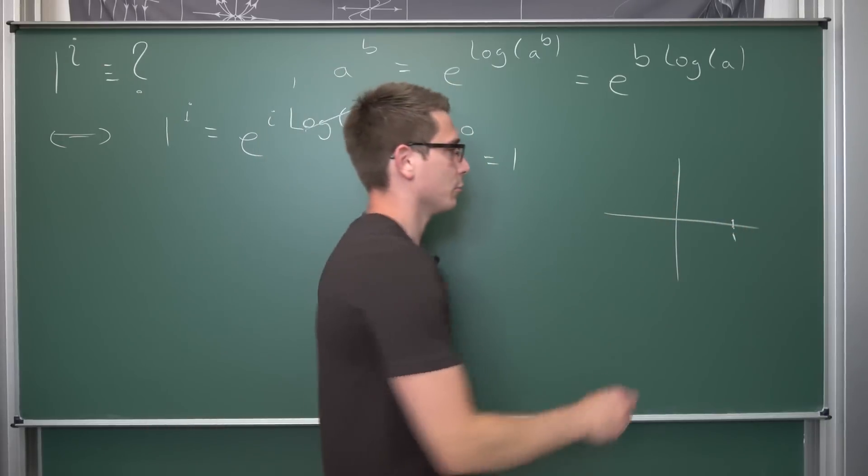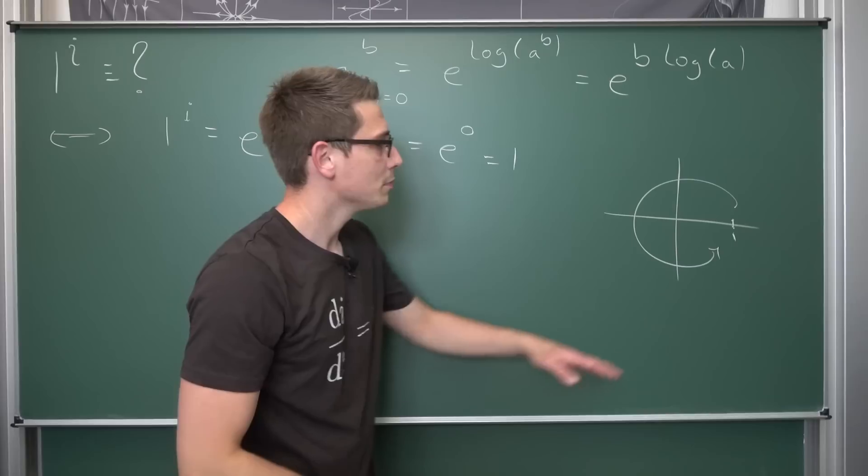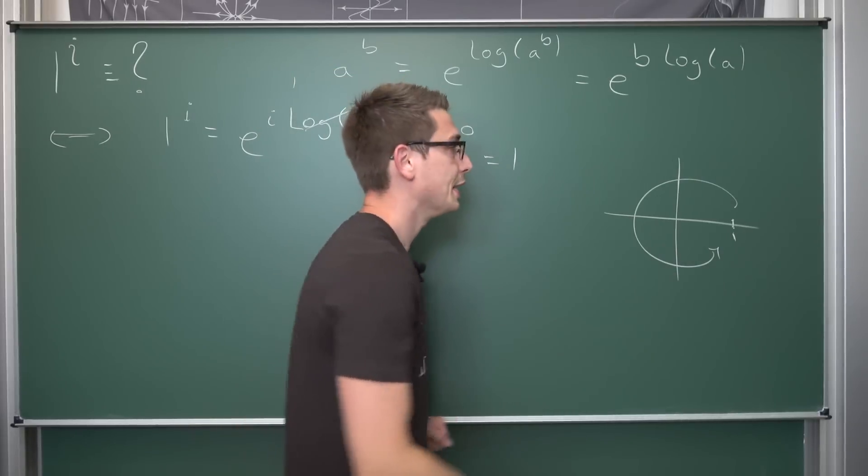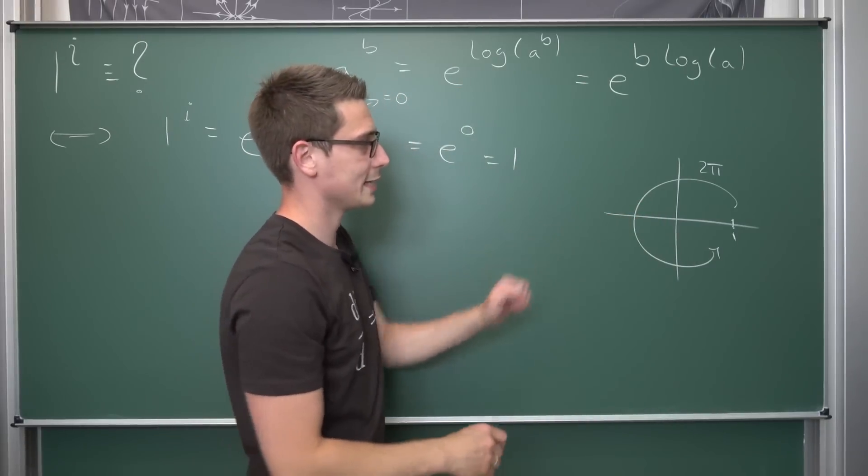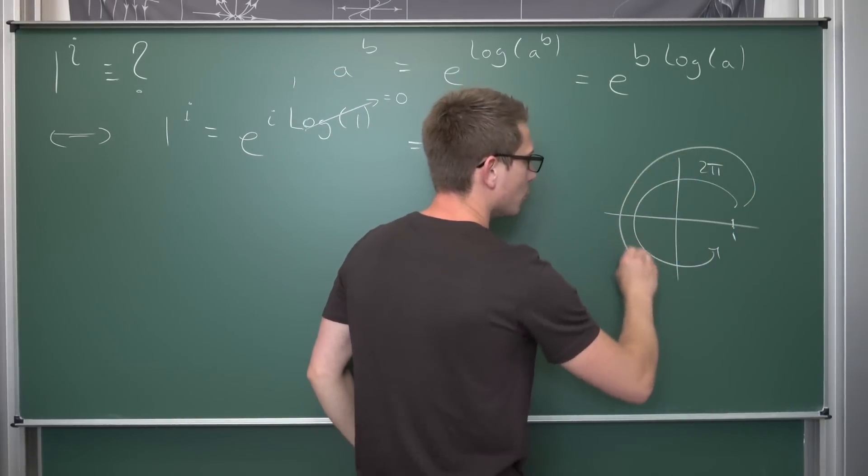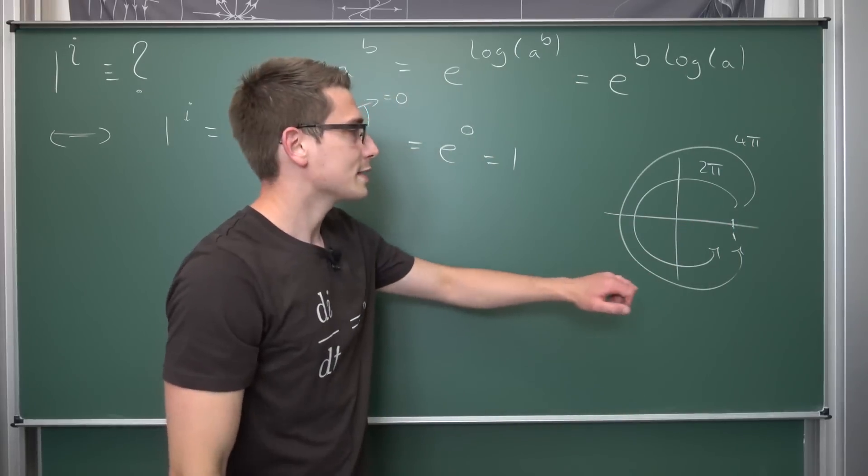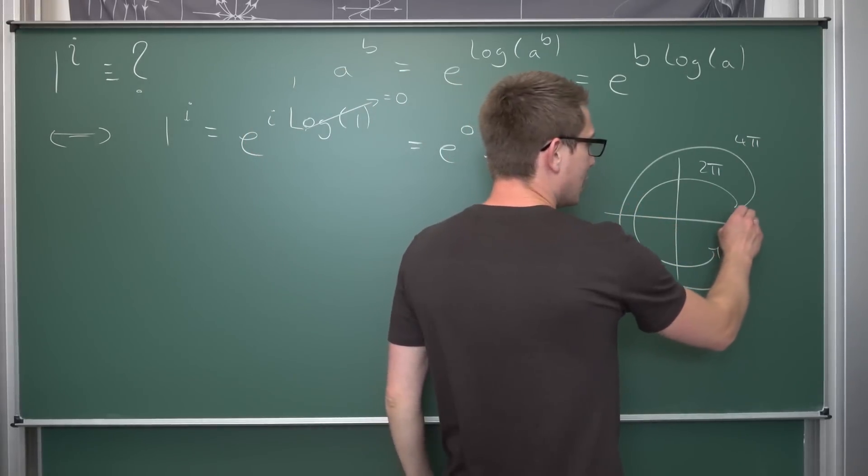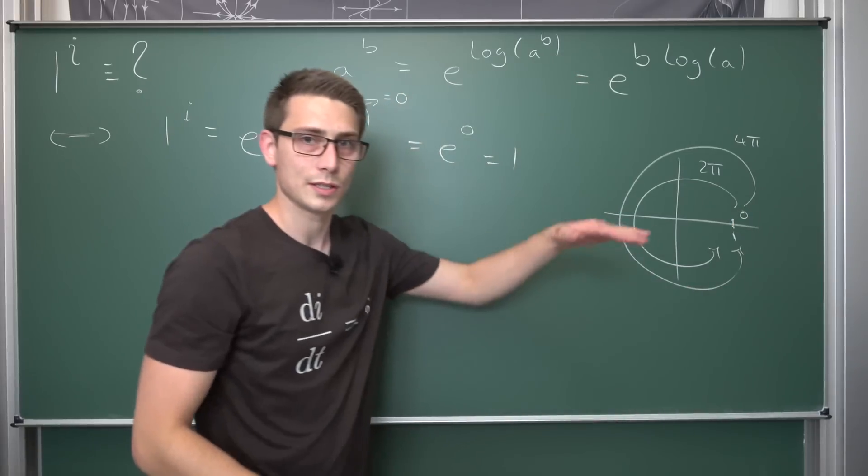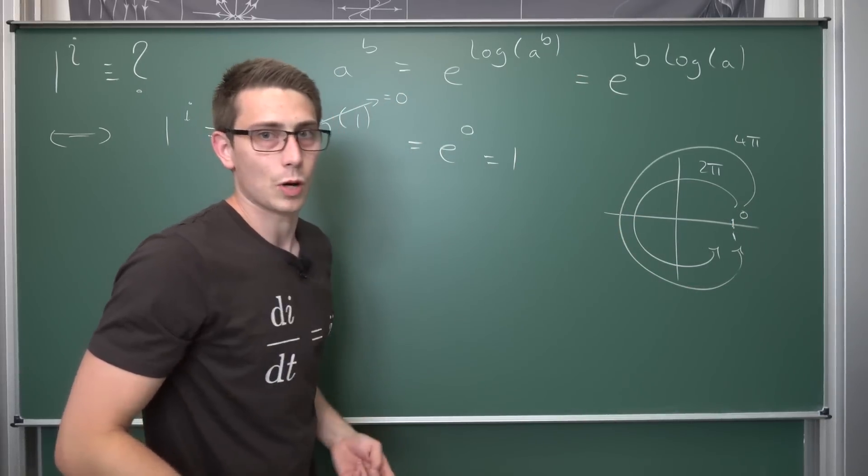But if we go around 2π, for example, we are going to land once again at 1, meaning if we do a rotation of 2π in the complex plane, we are going to land at 1 once again. Or if we go around once more, so 4π, we are going to land once again at 1. Or if we don't go around at all, we are just going to land at 0. So taking an angle of 0 radians, basically. It's going to give us 1, too. Or we can go the other way around, for example, negative 2π, negative 4π, etc.